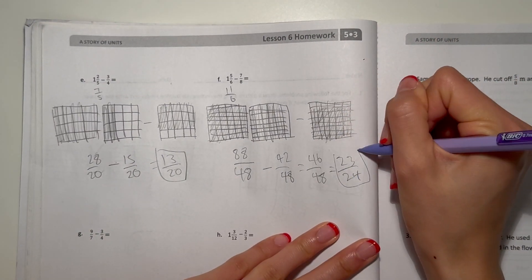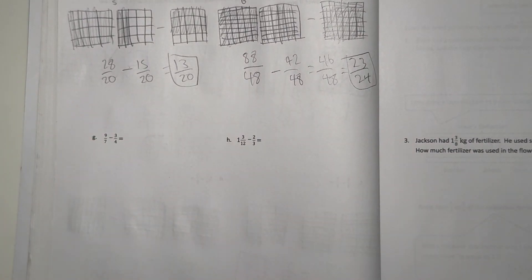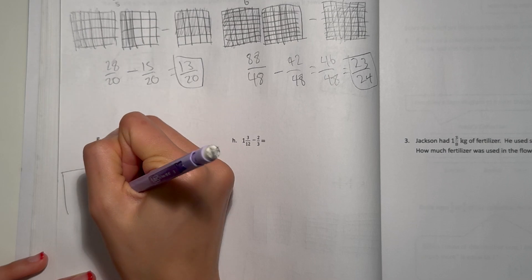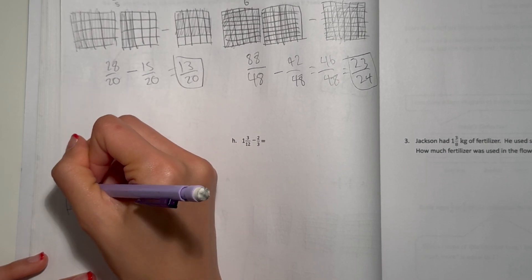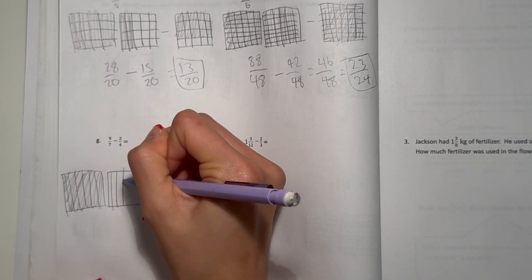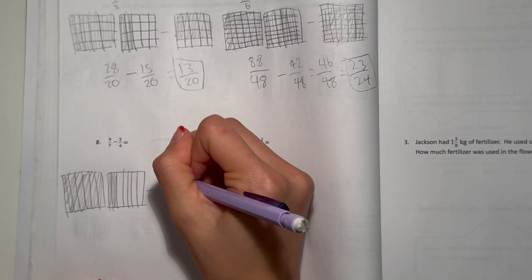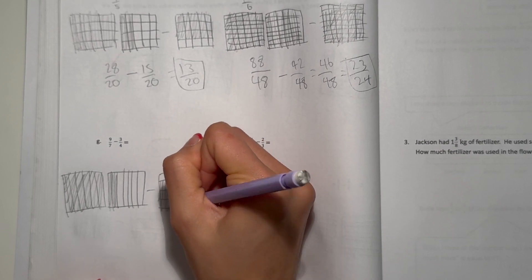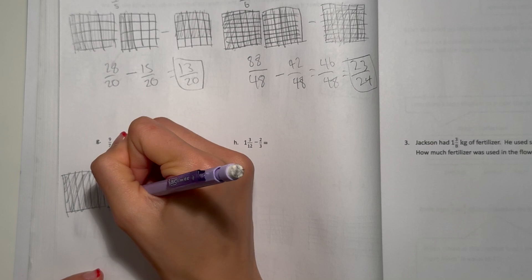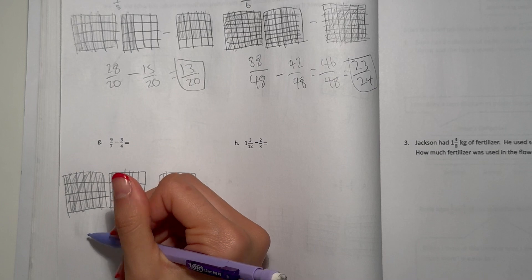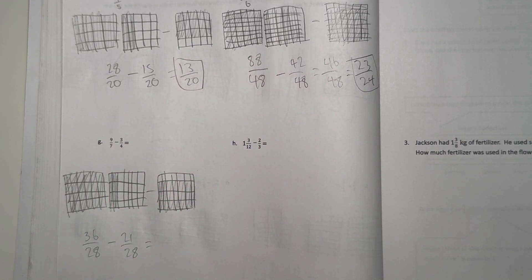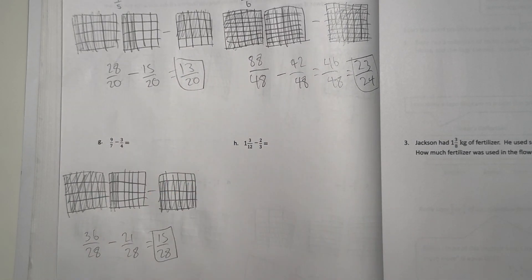Now for G: 9/7 minus 3/4. 9/7, that's already more than a whole. A whole is 7/7, so we need to draw another one with 2/7 shaded in. Minus 3/4. We have 36/28 minus 21/28. 36 minus 21 is 15/28.